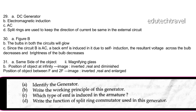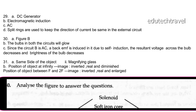Identify the generator in the figure: it is a DC generator. Its working principle is electromagnetic induction. The type of EMF induced in the armature is AC. In a DC generator, AC is produced in the armature, and the split-ring commutator is used to keep the direction of current the same in the external circuit, converting it to DC.